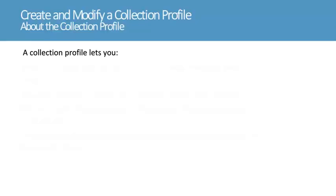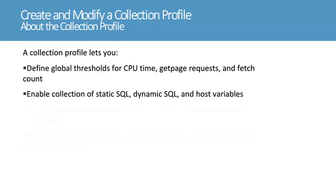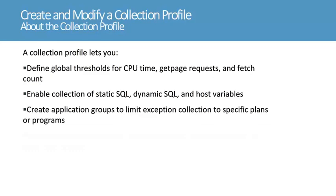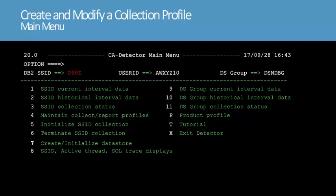In this section, we'll create and modify a collection profile. A collection profile lets you define global thresholds for CPU time, get page requests, and fetch count that determine which requests are exceptions. For exceptions, you can enable collection of static SQL, dynamic SQL, and host variables. You can also create application groups to limit exception collection to specific plans or programs, and define resource groups with unique threshold criteria that apply to the application groups. We'll start at the CA Detector main menu.